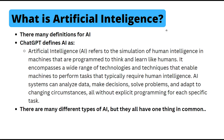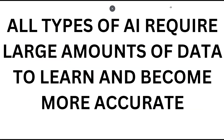So with all that being said, there are many different types of AI, but they all have one thing in common. All types of AI require large amounts of data to learn and become more accurate. If there's one thing you can take away from this video, it's this: just like our human brains, our knowledge is dependent on the amount of information our brain is fed throughout our lives, and the same goes for AI.